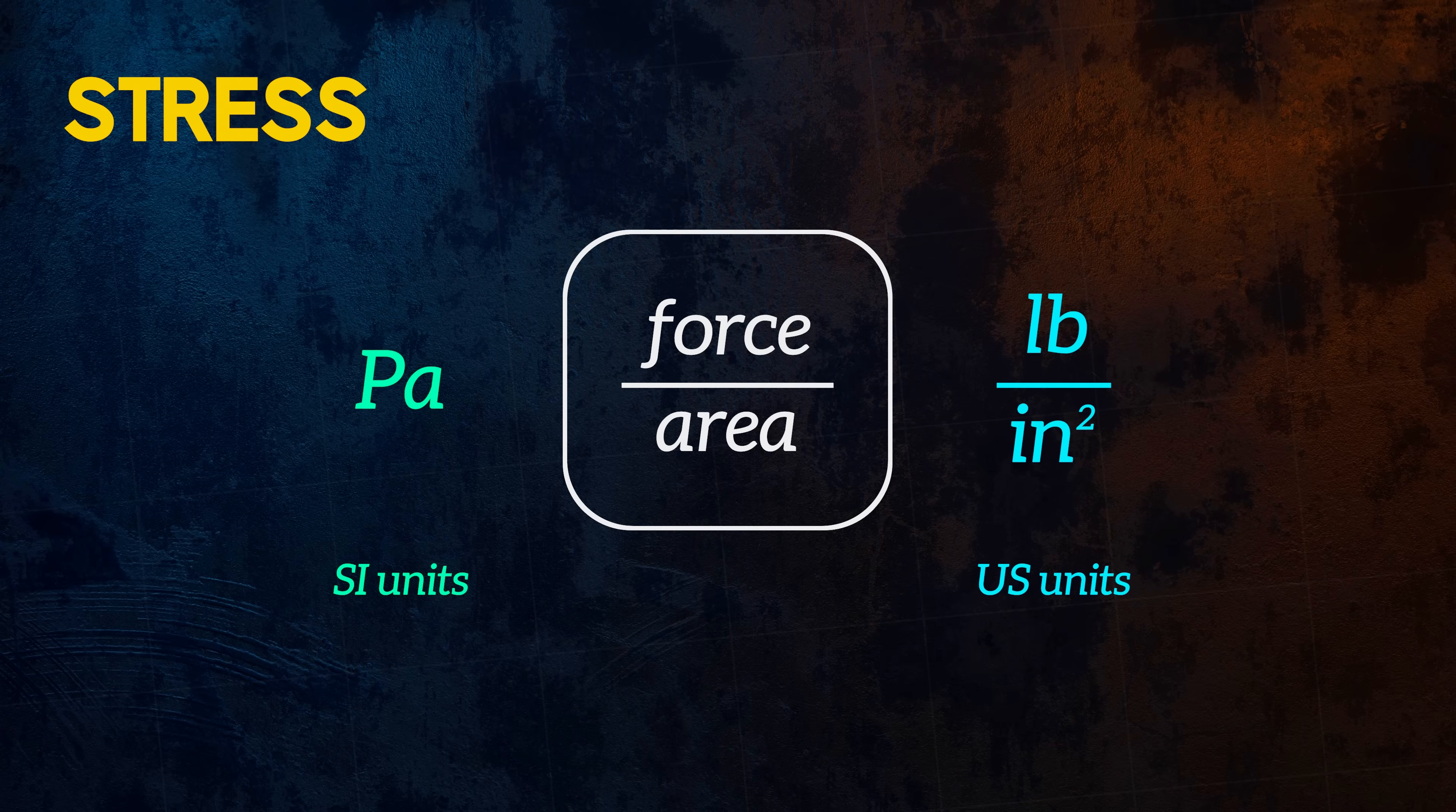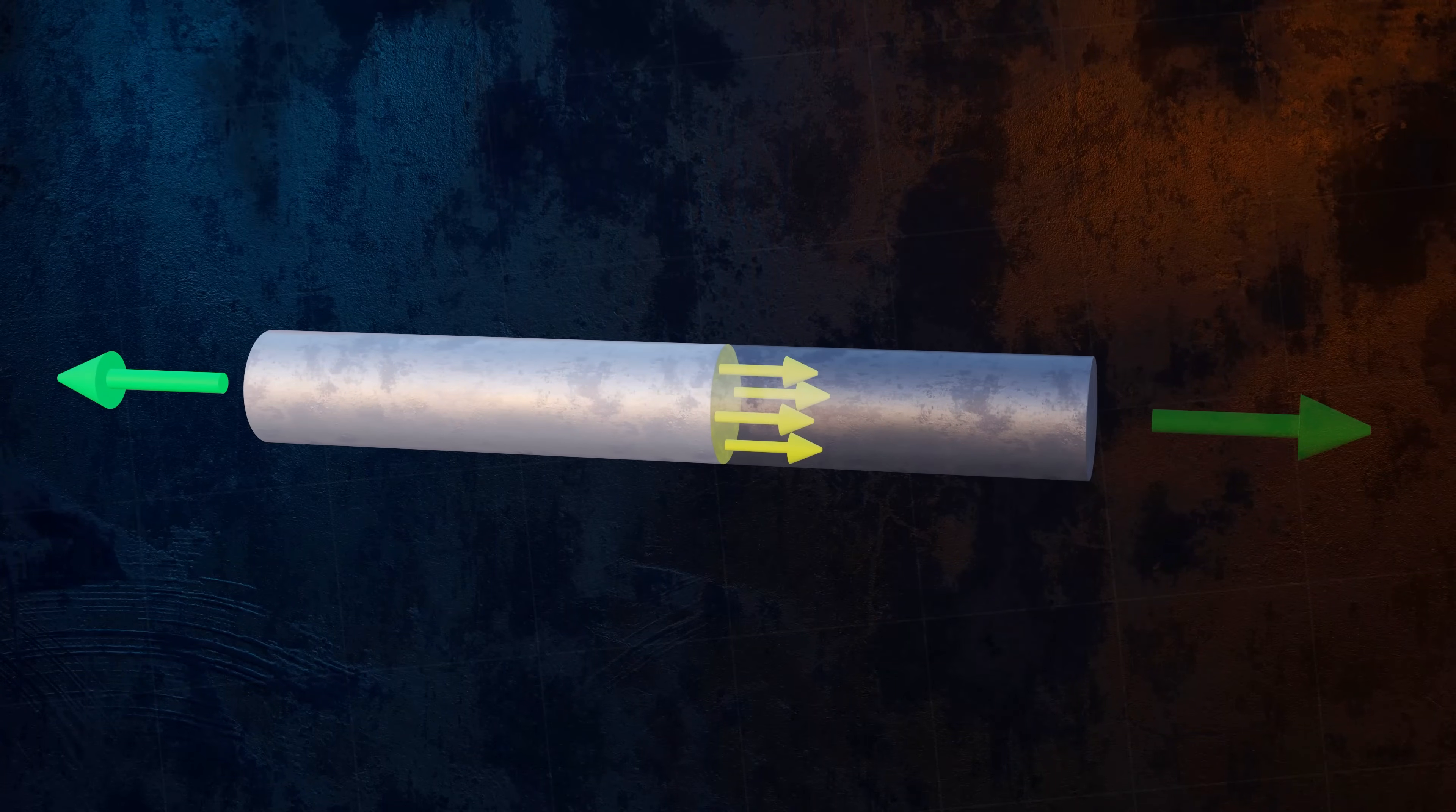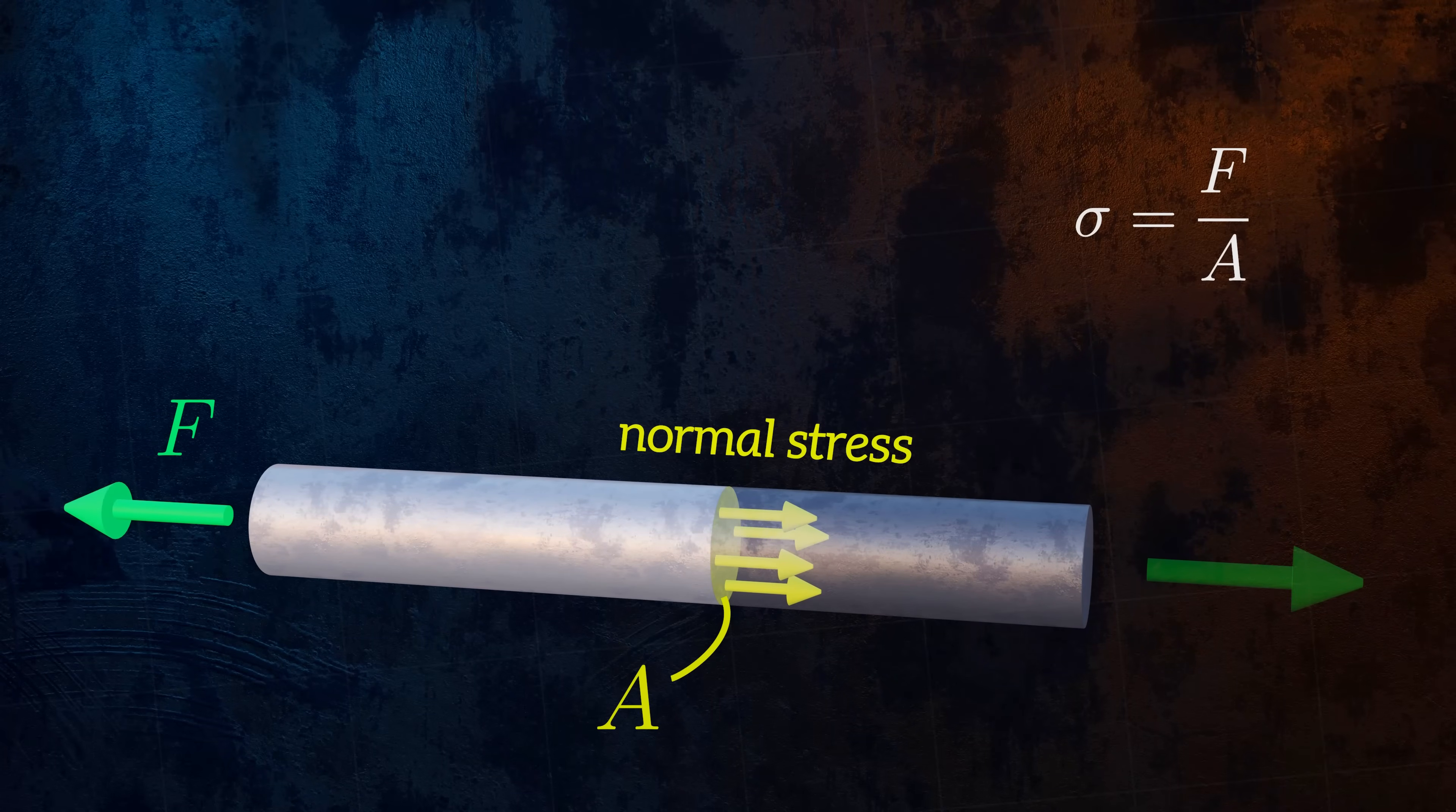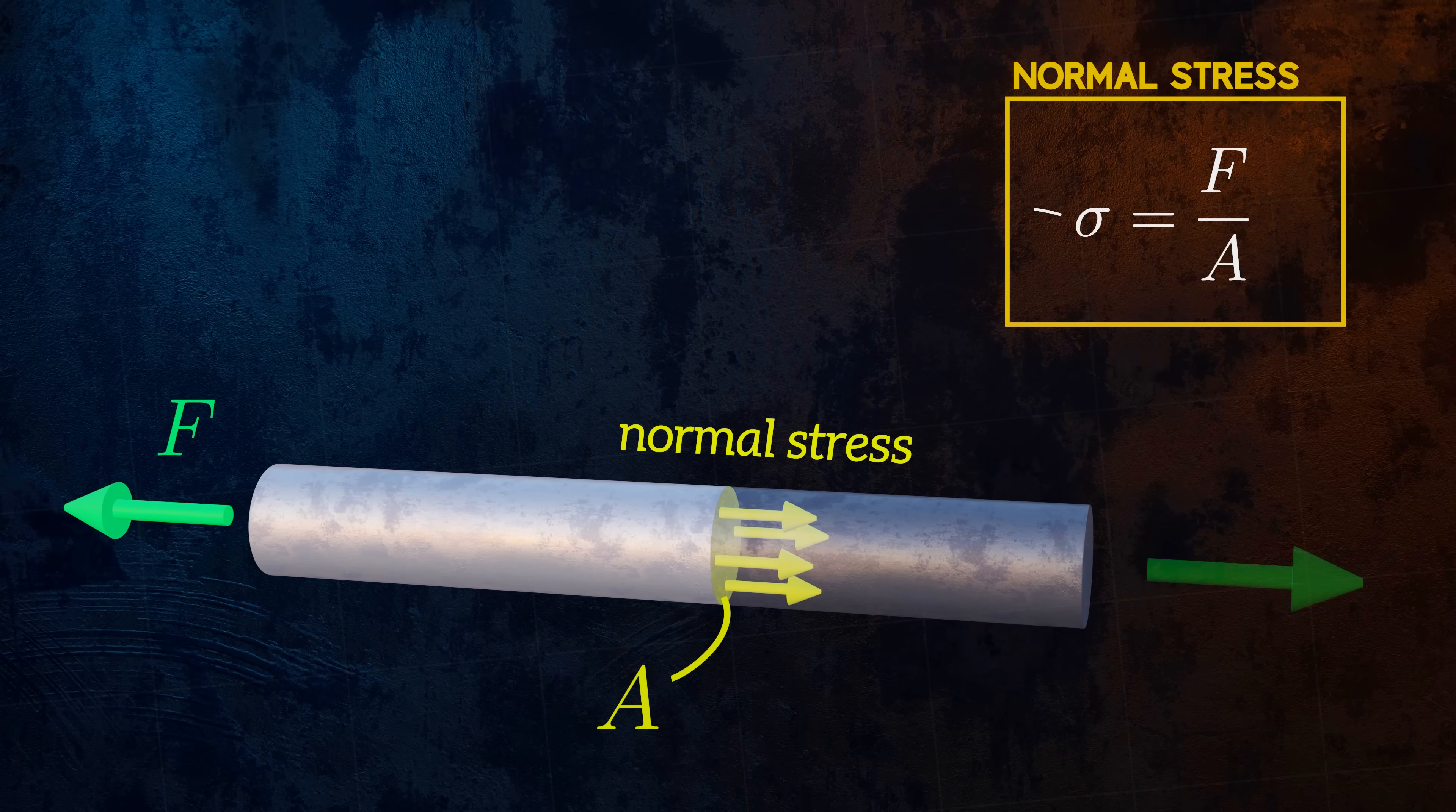In the case of our axially loaded bar, the internal forces are acting perpendicular to the direction of the cut we made. This type of stress is called normal stress. We can calculate the normal stress in our bar as the applied force F divided by the cross-sectional area A of the bar. It is denoted by the Greek letter sigma.